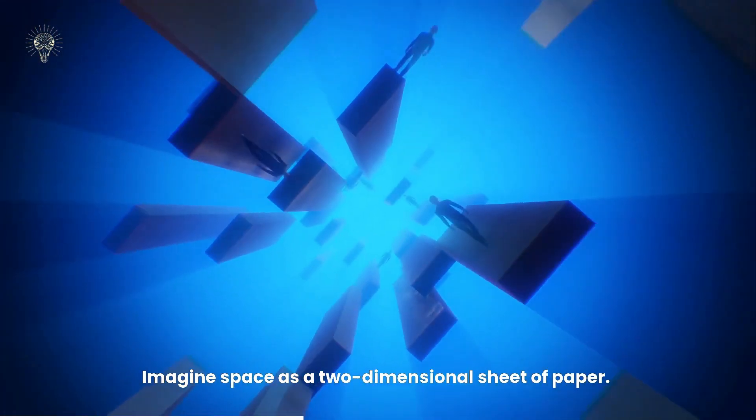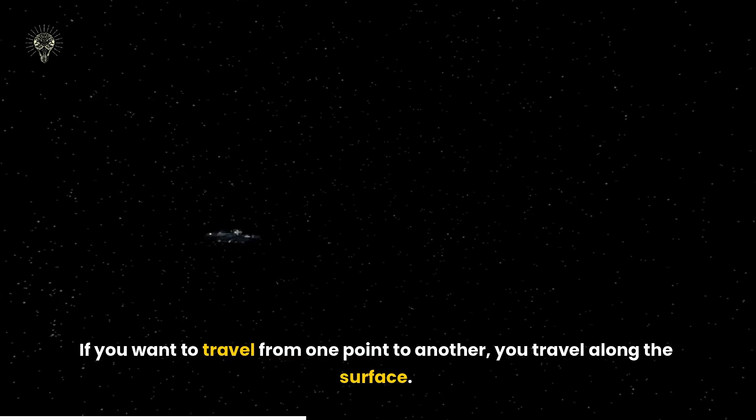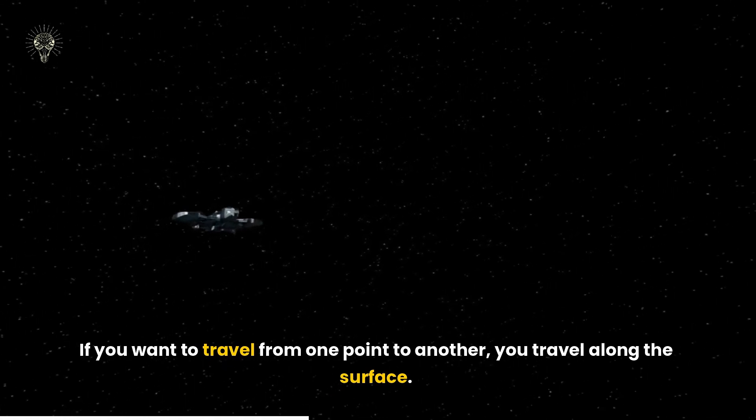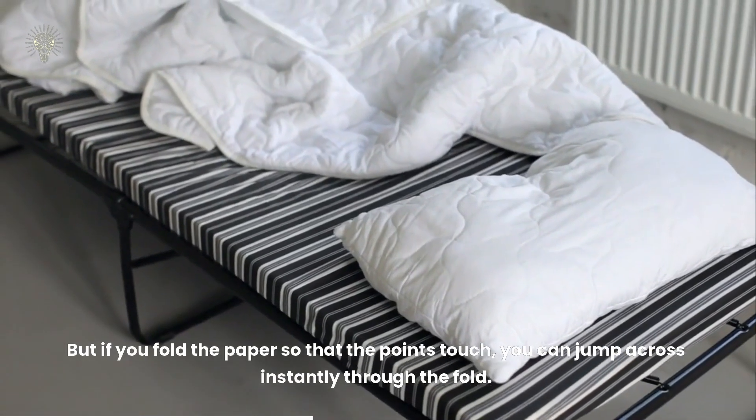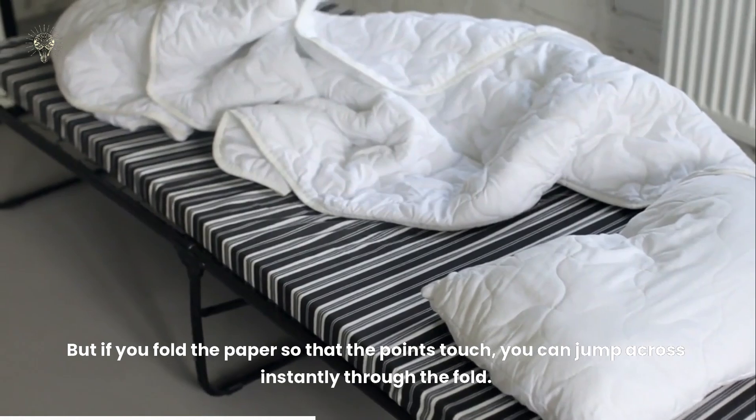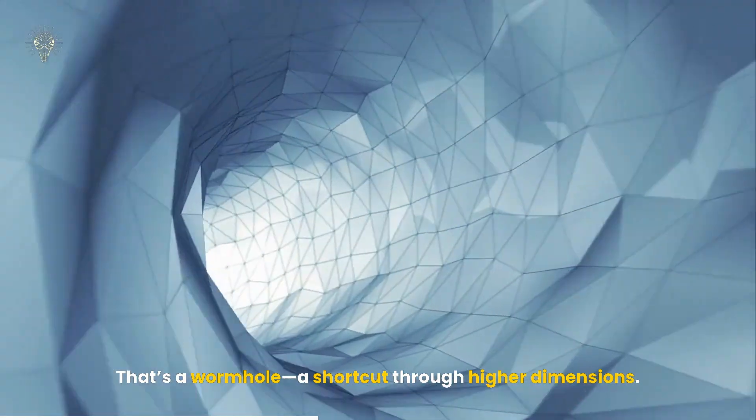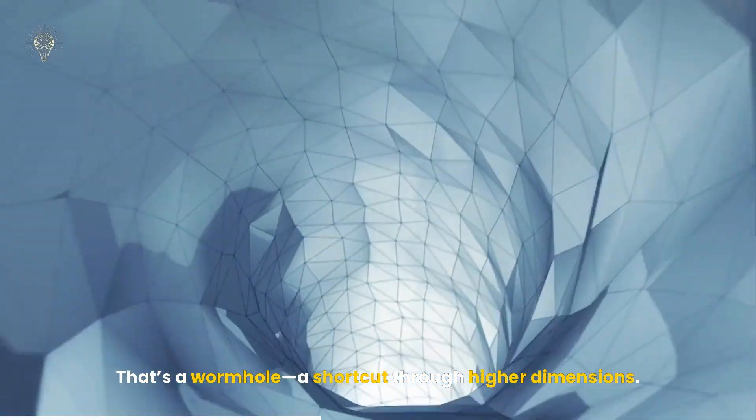Imagine space as a two-dimensional sheet of paper. If you want to travel from one point to another, you travel along the surface. But if you fold the paper so that the points touch, you can jump across instantly through the fold. That's a wormhole, a shortcut through higher dimensions.